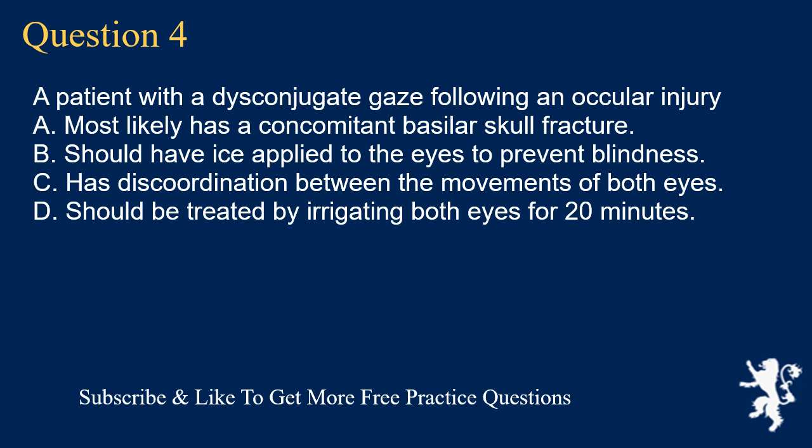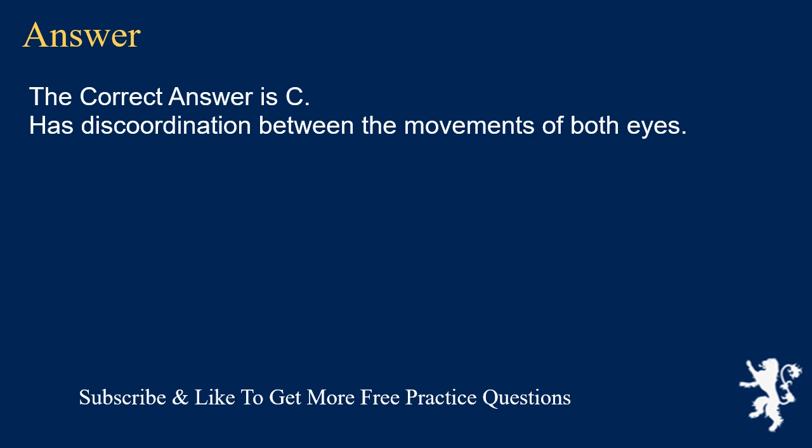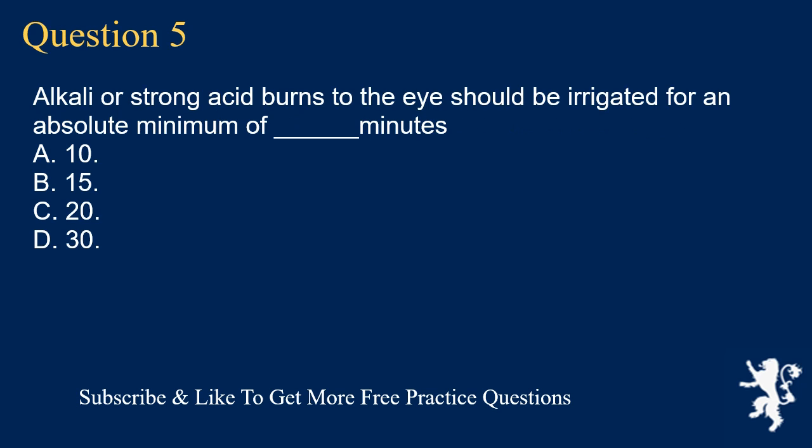Question 4. A patient with a disconjugate gaze following an ocular injury: A. Most likely has a concomitant basilar skull fracture. B. Should have ice applied to the eyes to prevent blindness. C. Has discoordination between the movements of both eyes. D. Should be treated by irrigating both eyes for 20 minutes. The correct answer is C. Has discoordination between the movements of both eyes.